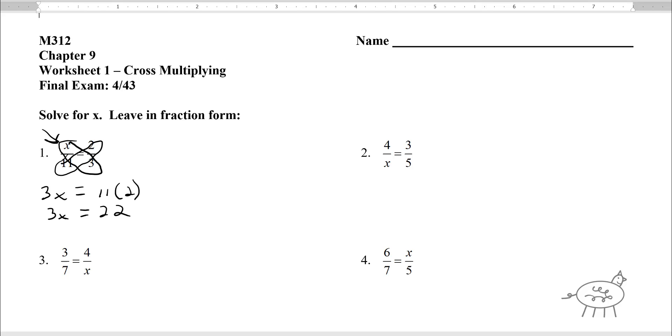That's all you do, cross multiply. So you multiply, and then you divide by 3, because you have to solve for x. So x is equal to 22 thirds. It's easy. It's very easy to do this.